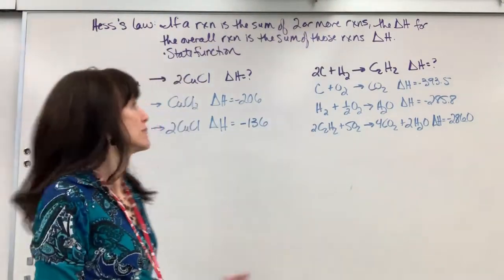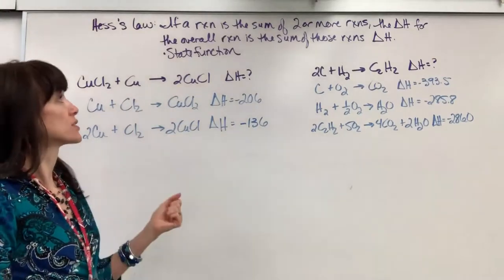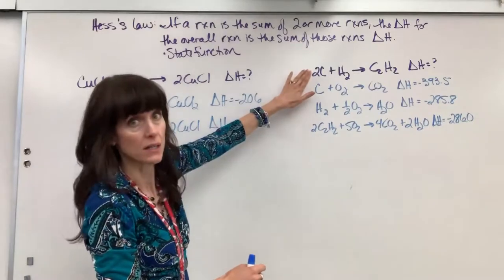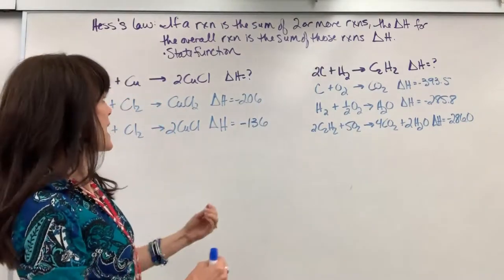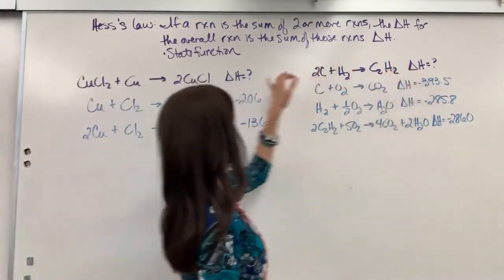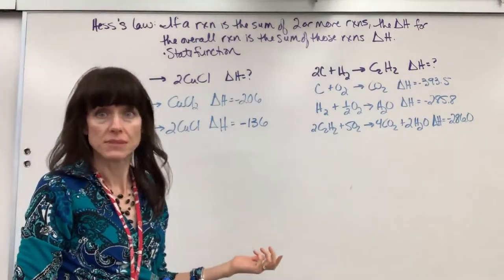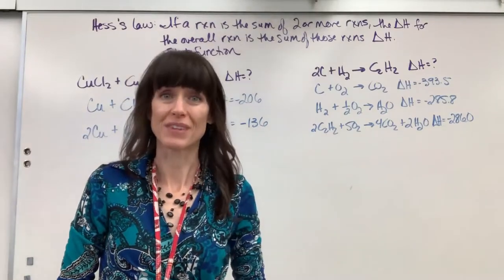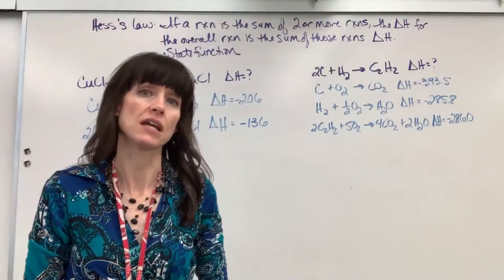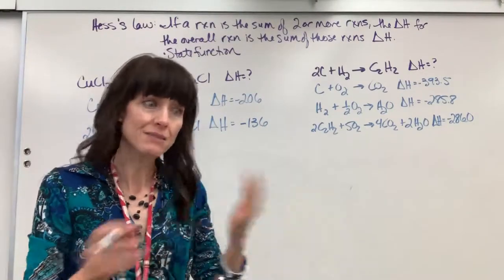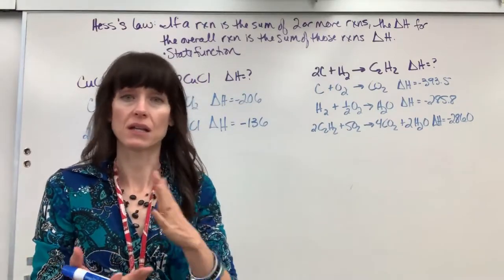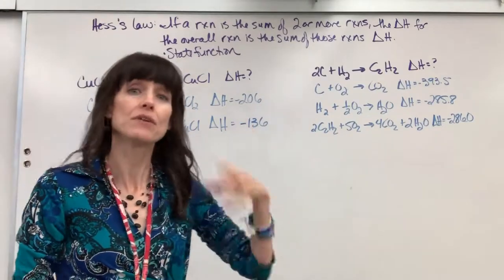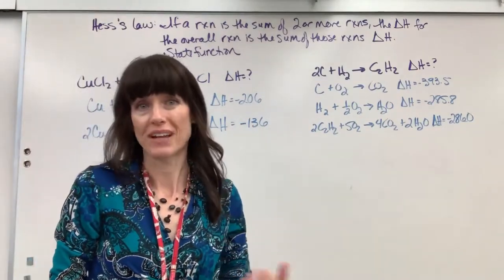Now let's look at the definition. If a reaction is the sum of two or more reactions, so I add these reactions together to get my target reaction, the delta H for that overall reaction is the sum of those reactions' delta H. I want to remind you this is a state function. This works because delta H is a state function, and you'll recall it doesn't matter the path that we take, it's just that the beginning and the end points are the same. So this allows us to do another method to find delta H.